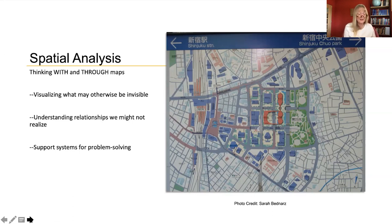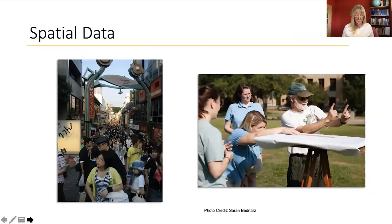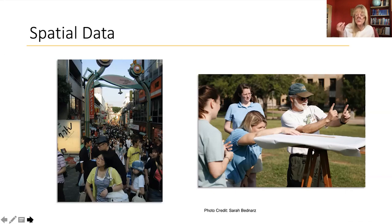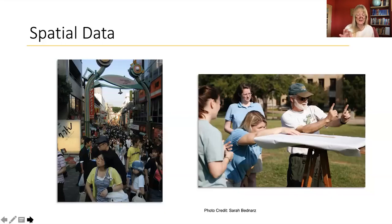Maps — especially thematic maps and other spatial representations like satellite images and graphs like population pyramids — act as support systems to analyze and solve problems. You've also begun to understand the world through data and information, both qualitative — like field observations, interviews, and landscape analysis — and quantitative information, things you can count. This information is all geospatial data, data with precise locations attached so they can be organized using geographic information systems. Knowing what data and what procedures to use, and under what conditions, takes practice.